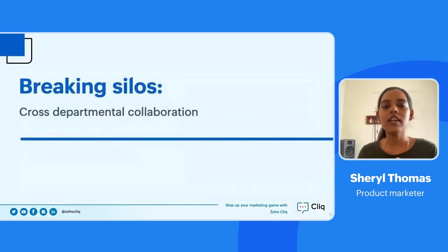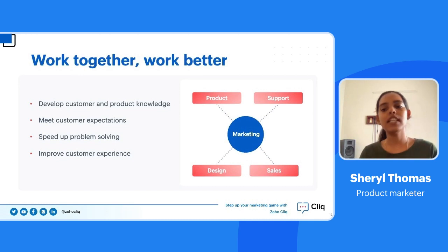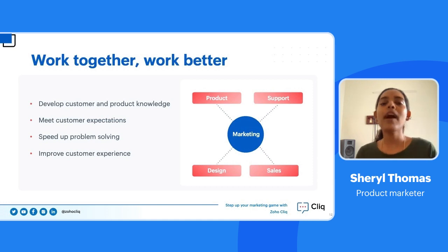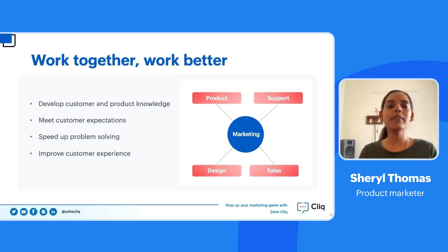Marketers are often encouraged to communicate with various departments and stakeholders — product teams, support teams, sales teams, market research teams, and others. For a marketer to tell a compelling story and build brand identity, they should be well aware of what goes into the product. When marketers interact with product teams, they gain a deeper understanding that helps them tell better stories and get the product out there.